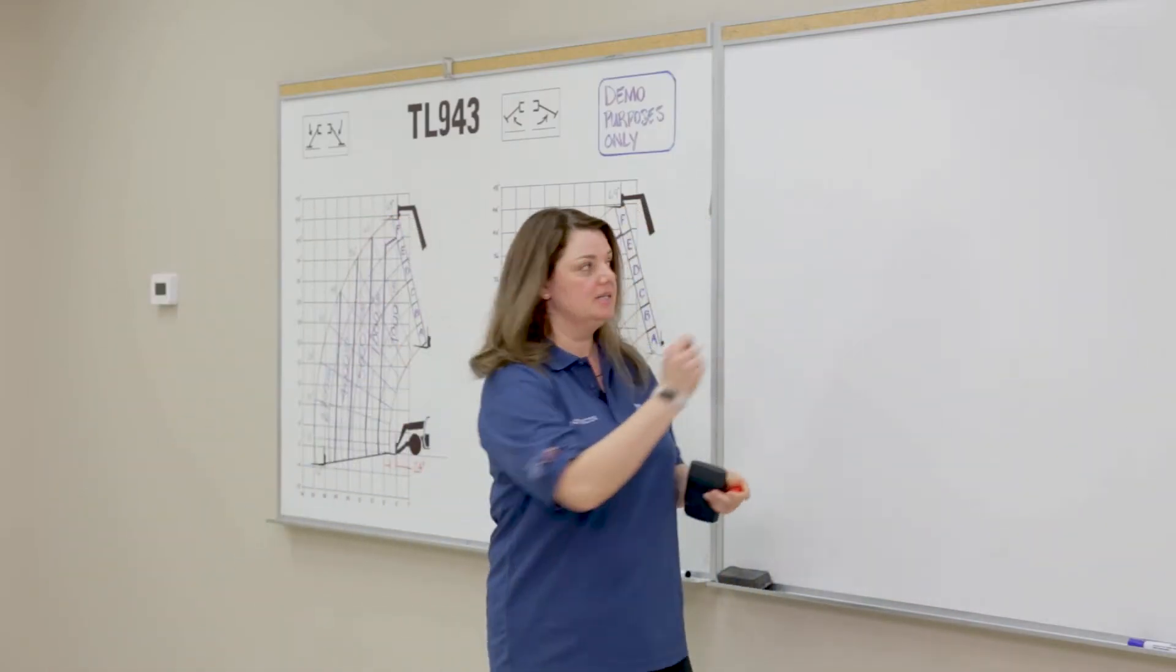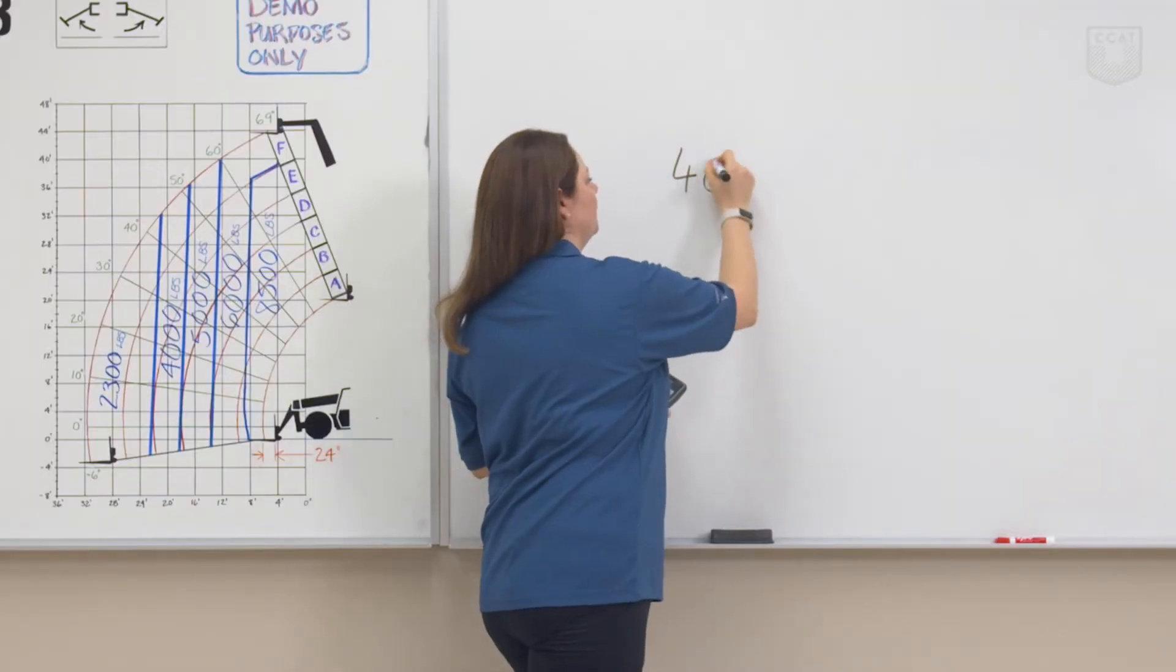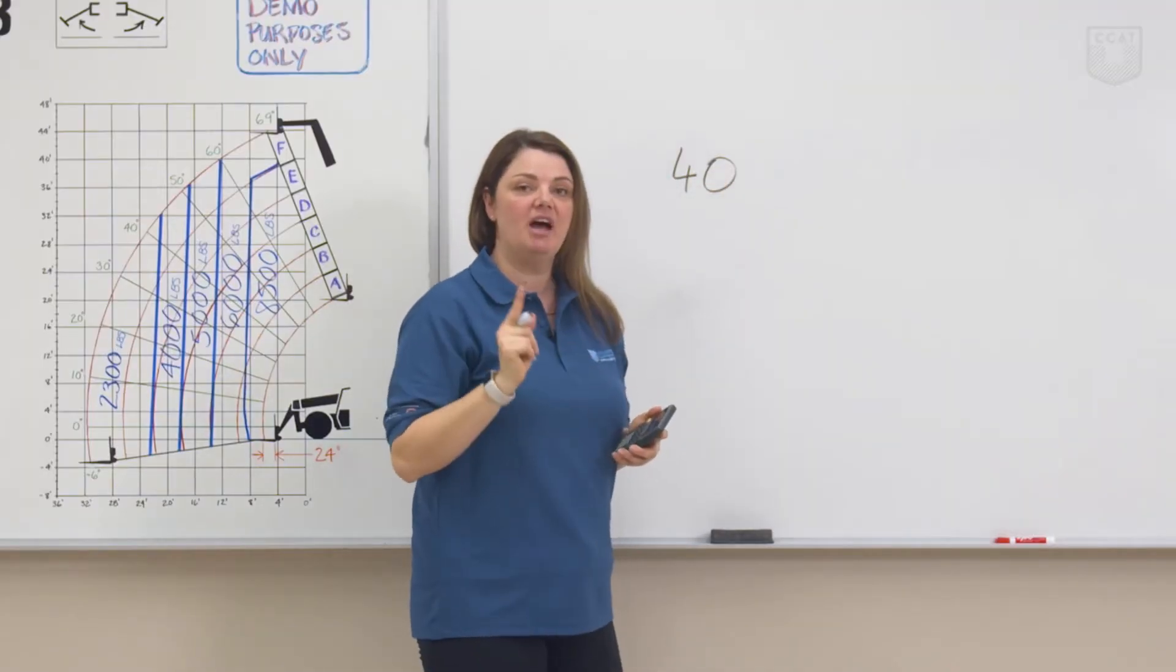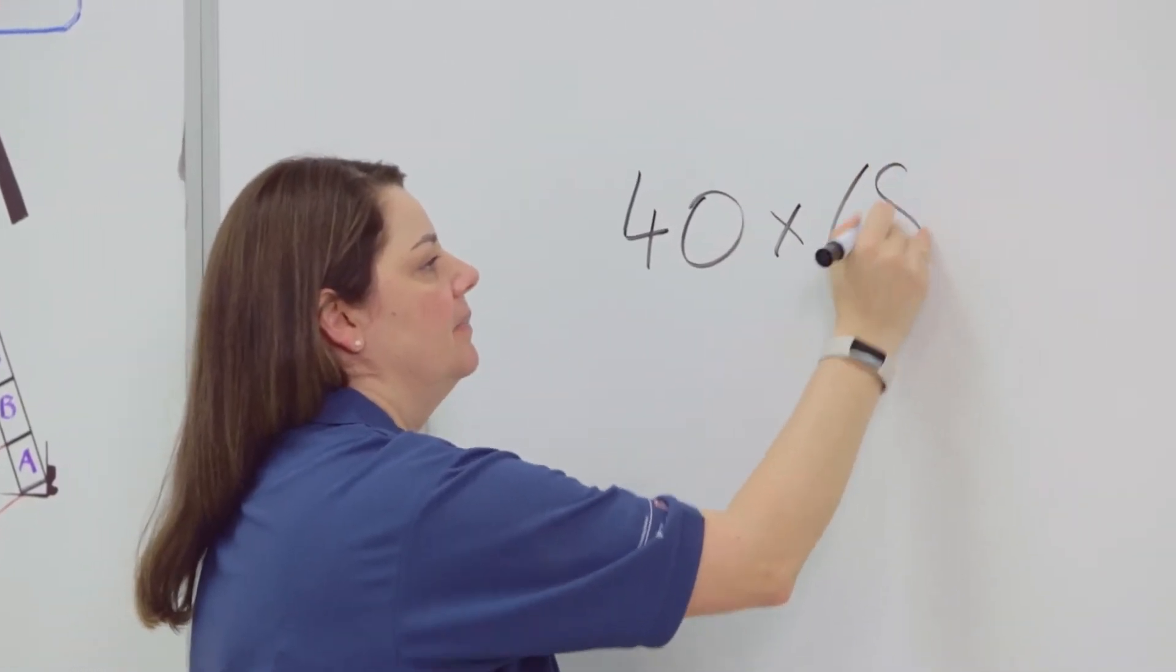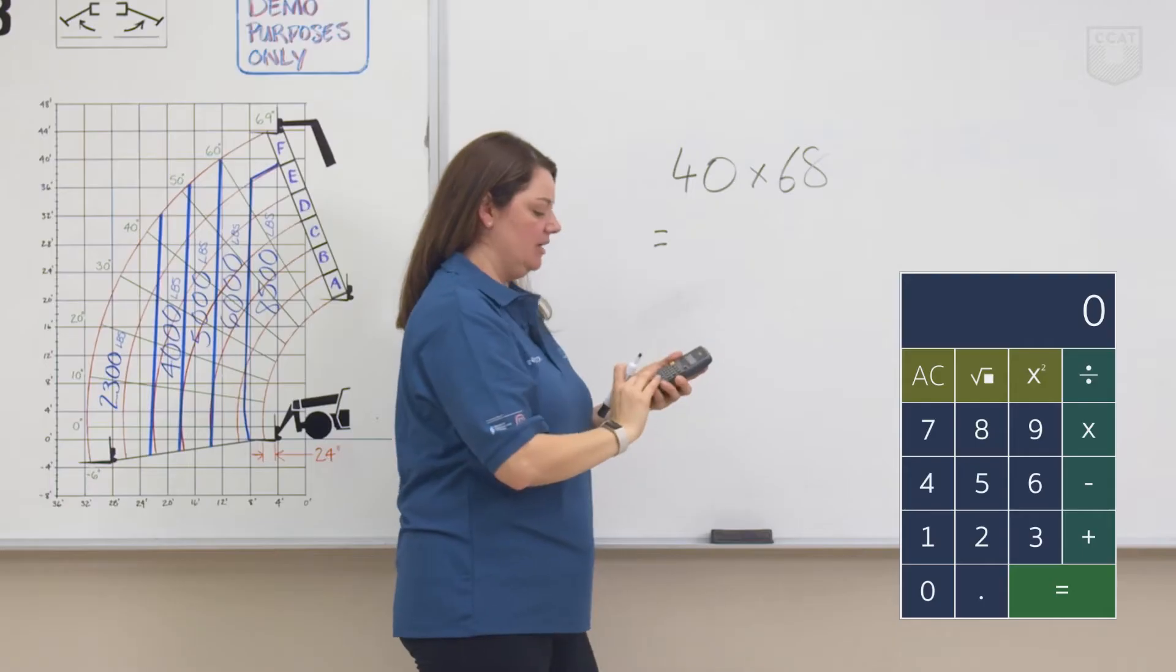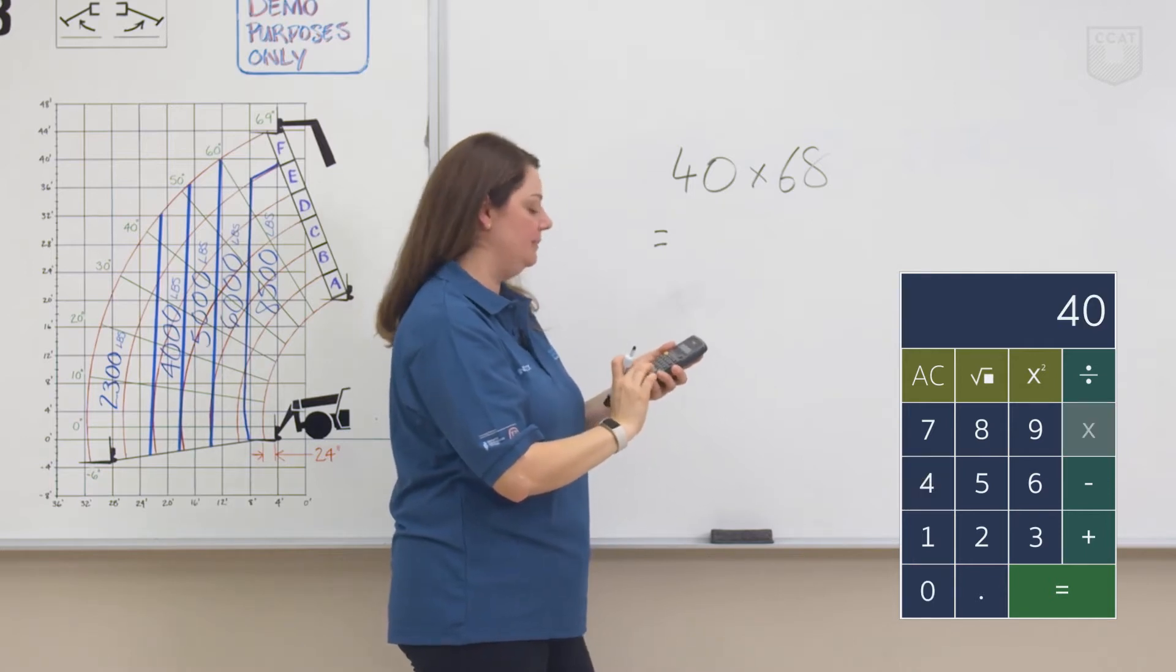Take your 40 sheets, and we're going to times it by the weight of one piece of plywood. So one piece of plywood is 68 pounds. And we're going to multiply those together, 40 times 68,